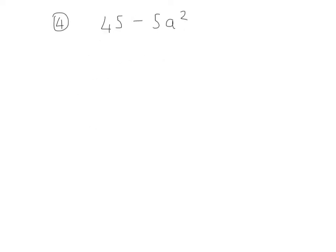Example 4: factorise 45 minus 5a squared. Again, we look for a common factor. From 45 and 5, I can take 5. And that gives us 5 bracket 9 minus a squared.